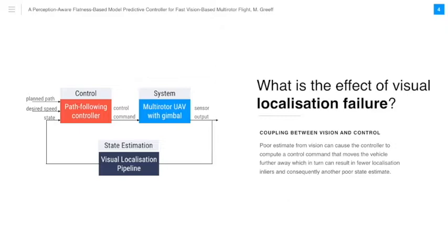What is the effect of visual localization failure? While we treat estimation and control separately, there is still a coupling between vision and control. In fact, this coupling between vision and control actually results in a positive feedback loop, where a poor estimate from vision can cause the controller to compute a control command that moves the vehicle further away, which in turn can result in fewer localization inliers and consequently another poor state estimate.